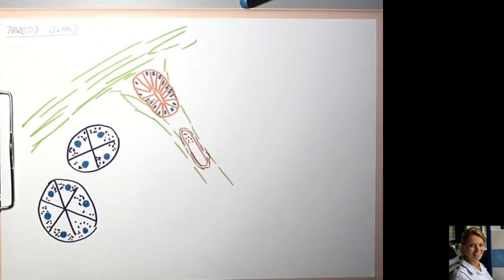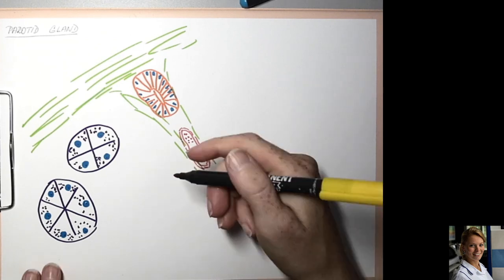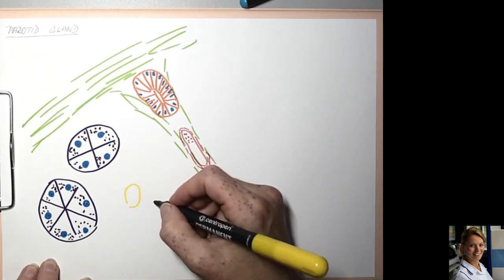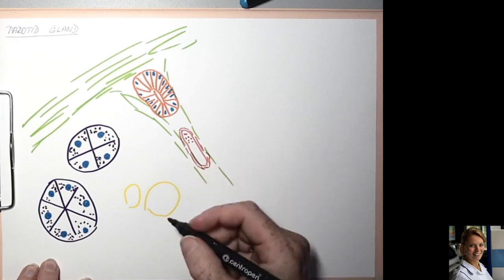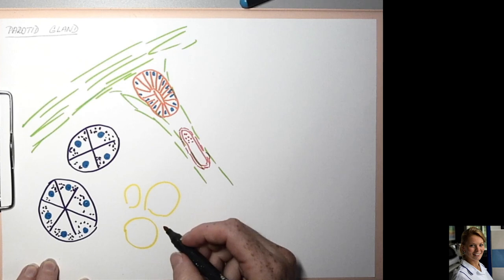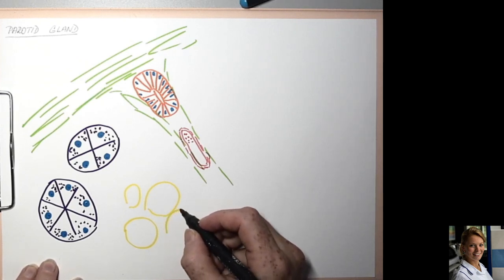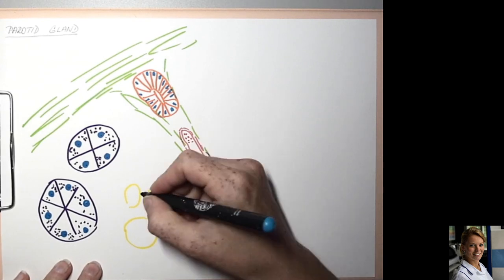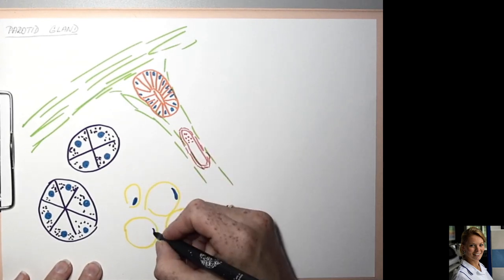The acini are surrounded by a large amount of fat cells. The fat is dissolved during routine histological processing when we use organic solvents, so the cells appear empty because the fat from the huge vacuole in the cytoplasm disappeared and the nucleus is peripherally located. These are the fat cells.